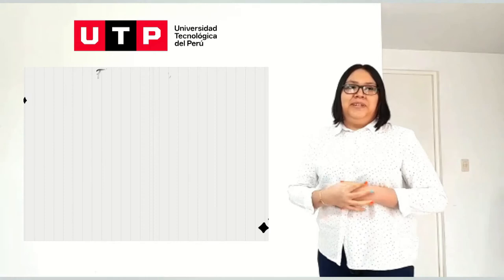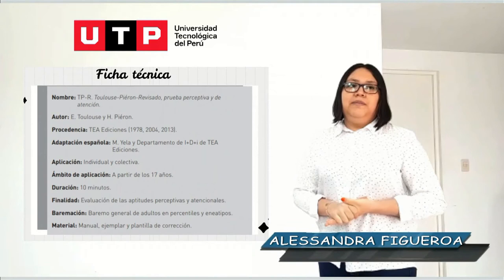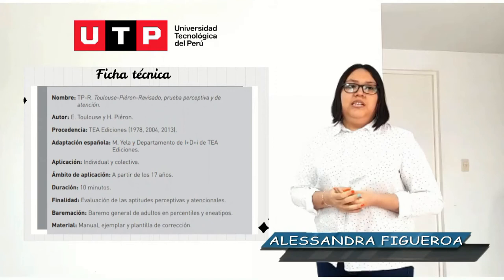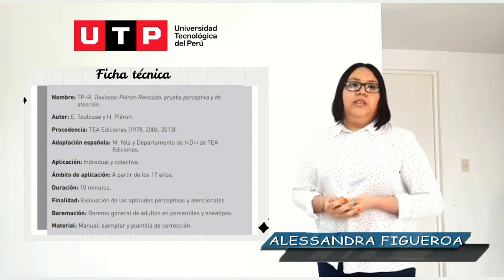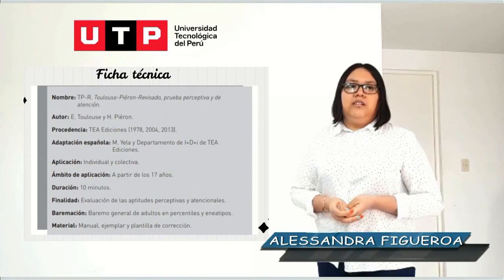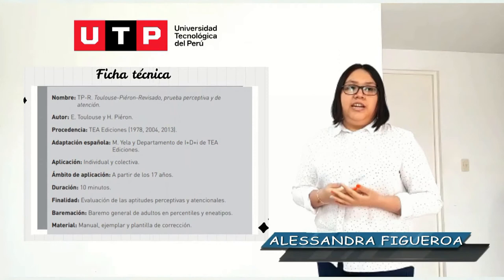Ficha técnica: nombre T.P.Y.R. - Toulouse Piéron Revisado, prueba perceptiva y de atención. Autor: E. Toulouse y H. Piéron. Procedencia: TED Ediciones. Adaptación española: Departamento de I+D de TEA Ediciones. Aplicación: individual y colectiva. Ámbito de aplicación: a partir de los 17 años. Duración: 10 minutos. Finalidad: evaluación de las actividades perceptivas y atencionales.